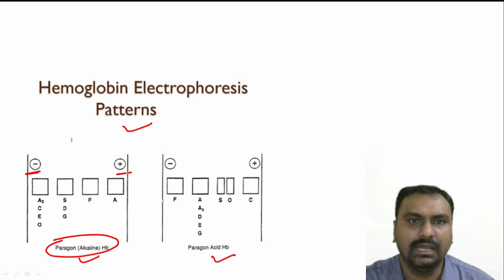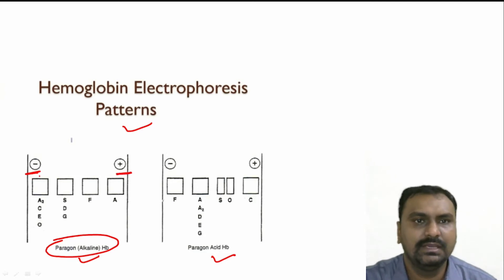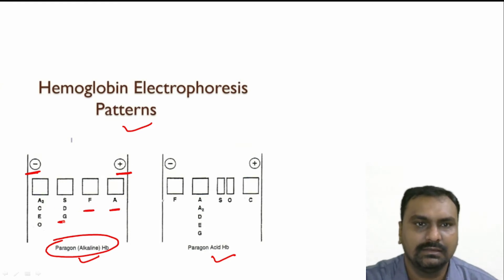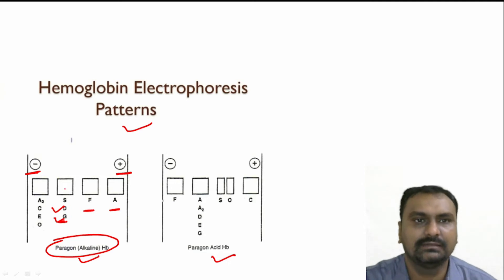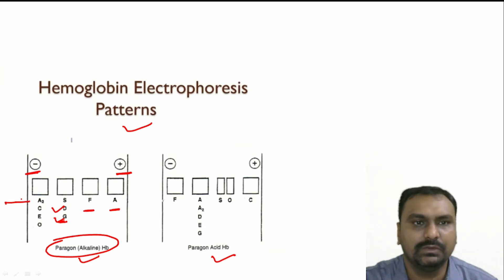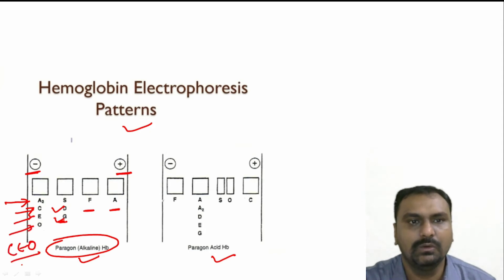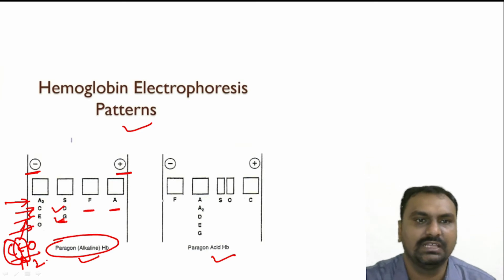This is the cathode side and this is the anode side. You can see here HbA has the highest mobility, followed by fetal hemoglobin, then HbS. At the HbS position there can be either HbD or HbG — so HbS, HbD, and HbG will fall at the same level in alkaline hemoglobin electrophoresis on agarose medium. At the HbA2 region there can also be HbC, HbE, and HbO — you can remember CEO at the A2 region. HbC is mainly seen in the African area, HbE is from Northeast India like West Bengal and Assam, and HbO is found mainly in the Arab area.